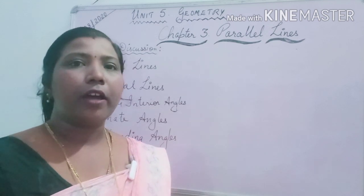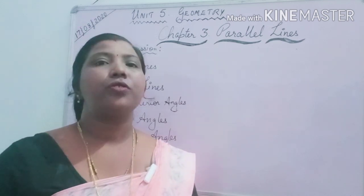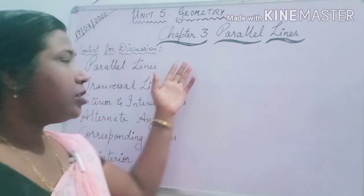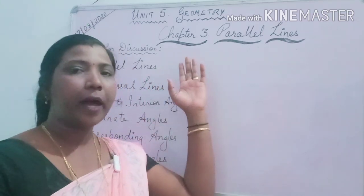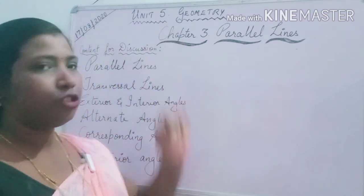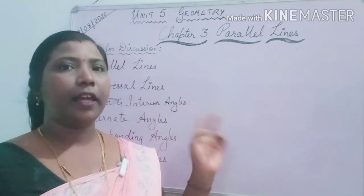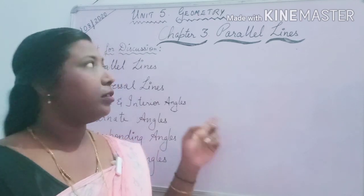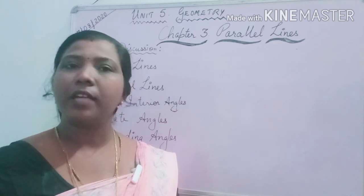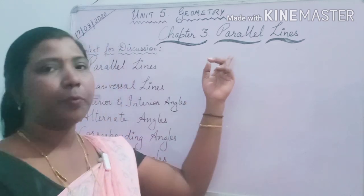Good morning students, I hope you all are keeping well. Today we are going to discuss Chapter 3 Parallel Lines under Unit 5 Geometry. This is the second chapter of this unit — the first chapter was Angles and the second chapter is Parallel Lines.